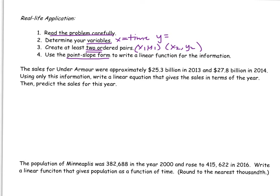The sales for Under Armour were approximately $25.3 billion in 2013 and $27.8 billion in 2014. Using only this information, write a linear equation that gives the sales in terms of the year. So given the sales in terms of the year, sales would be the y, the year would be the x. Then predict the sales for this year. So we've got $25 billion in 2013. The year should be our x, so that would be our x1. The sales would be our y1. Then in 2014, that's another year, we'll make that another coordinate. The sales increased to $27.8 billion. That would be our y2.